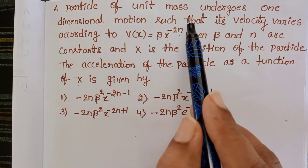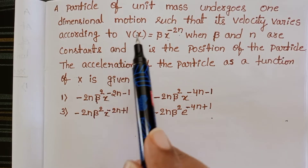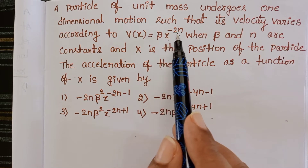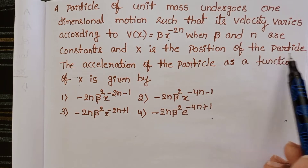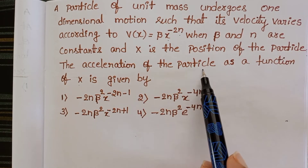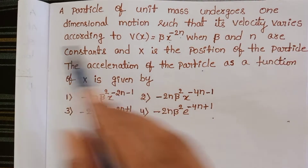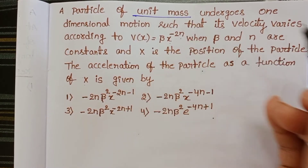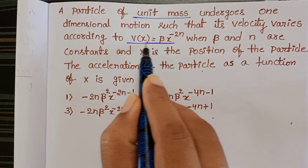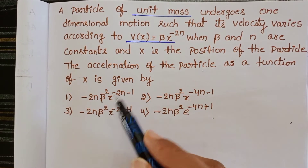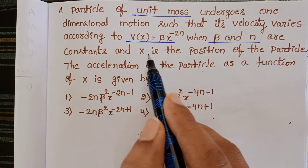A particle of unit mass undergoes one-dimensional motion such that its velocity varies according to v(x) = β·x^(-2n), where β and n are constants and x is the position of the particle.